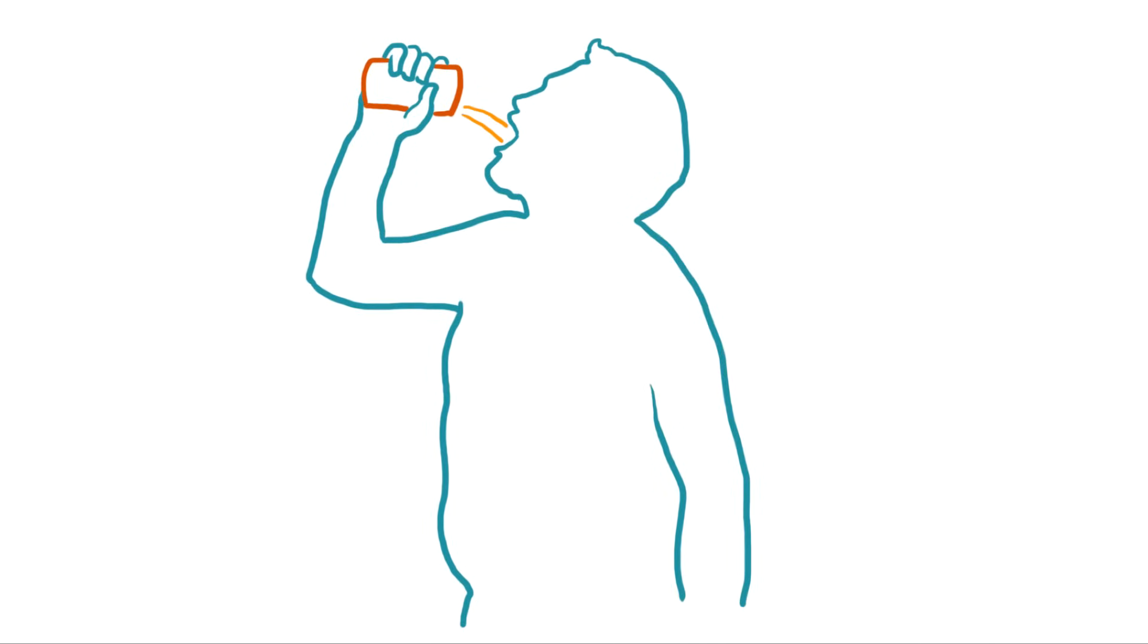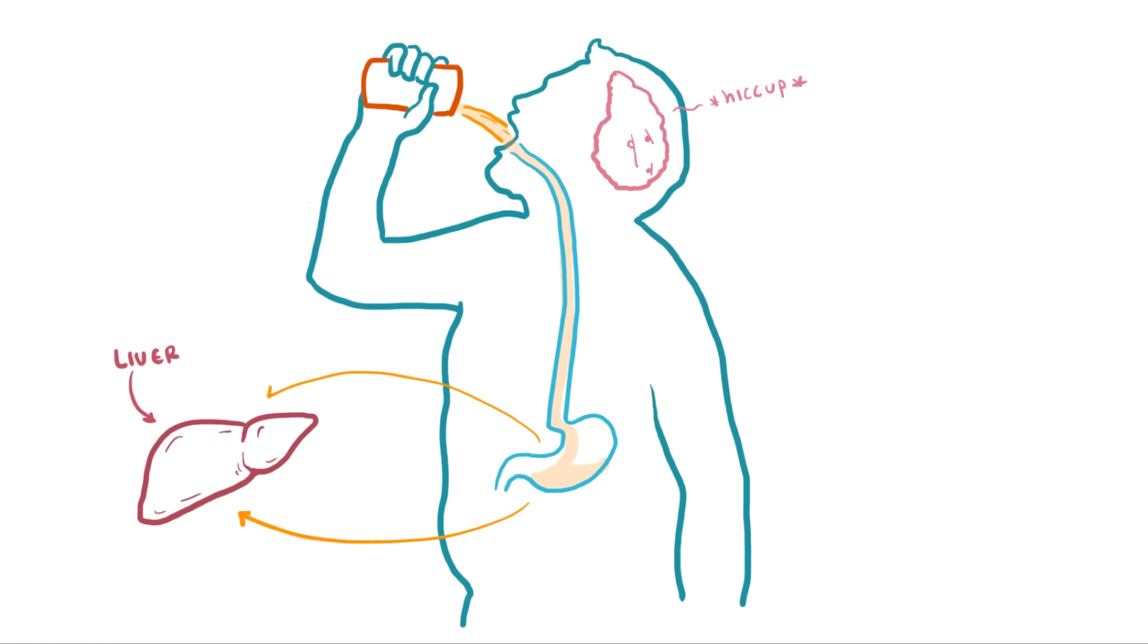Alright, so when you drink alcohol, what happens? Well, okay, what happens to the alcohol? Well, that's mainly your liver's job, right? Basically, once the alcohol gets to your stomach, most of it is sent to your liver for processing.